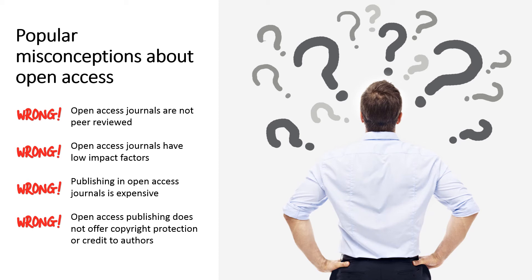Myth two: open access journals have low impact factors. This is, once again, a myth. Many open access journals publish highly-cited articles and receive high impact factors. Myth three: publishing in open access journals is expensive. Authors often avoid publishing in open access journals as they feel they will not be able to afford the high APCs. However, the truth is that not all open access journals charge APCs, and the ones that do generally have the APCs clearly mentioned on their website. APCs vary across journals and are not always high.